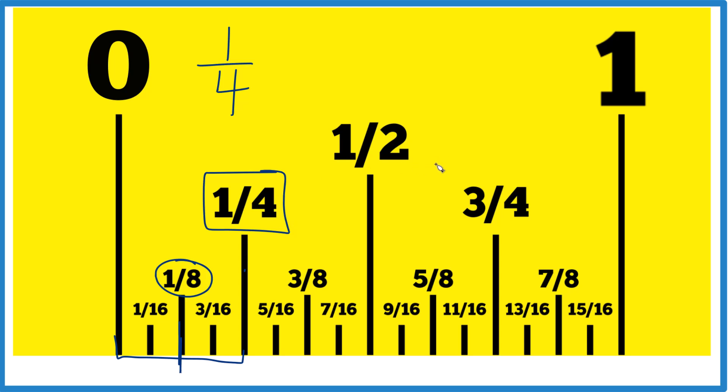So half of one fourth is one eighth. Another way to think about this is we have one part of four. So if we take half of one, we get 0.5 or one half, and we keep the four the same because we still have four pieces. We just took half of them. This is a little bit awkward.